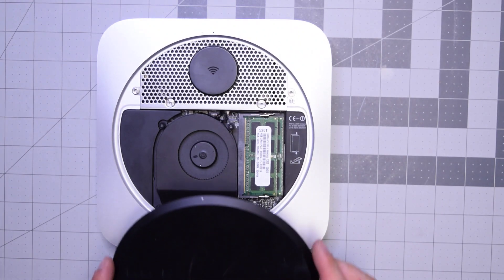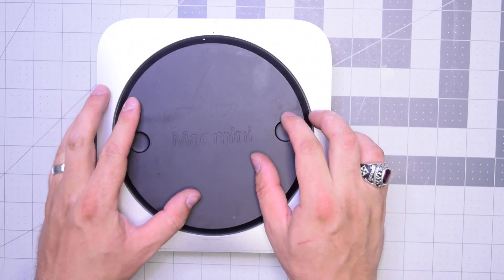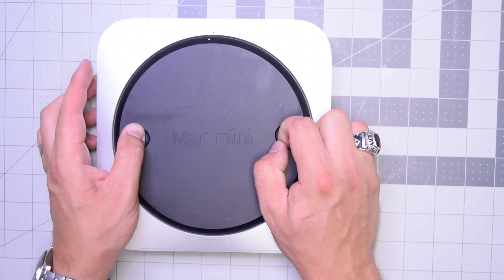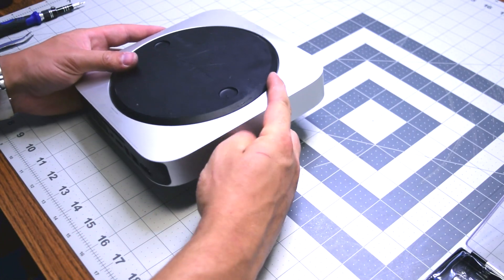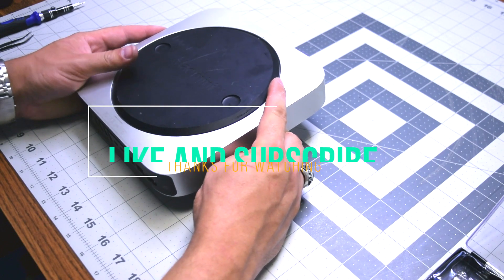We can now go ahead and put the top cover at an angle first, and then twist it into its locking position. And that's it. We're all done. Thank you very much for watching.